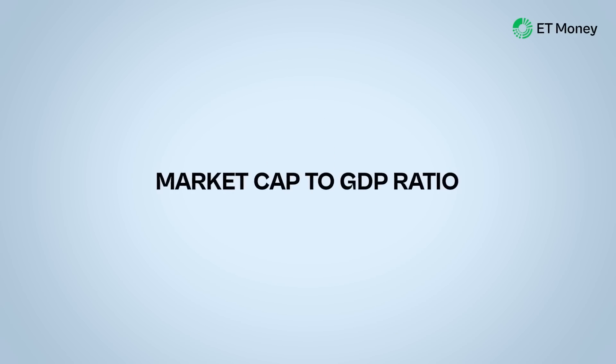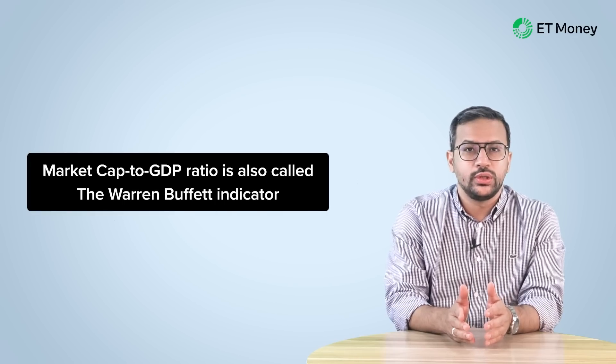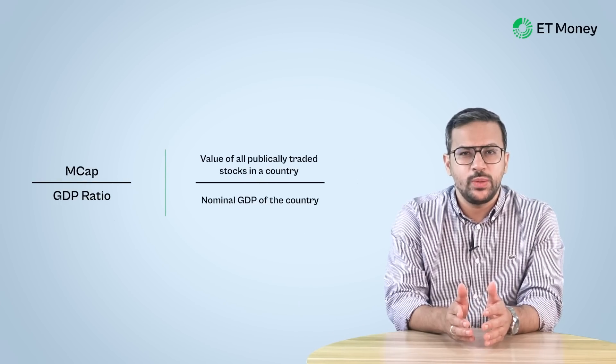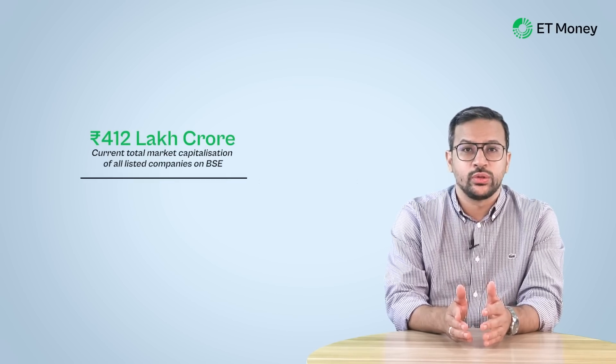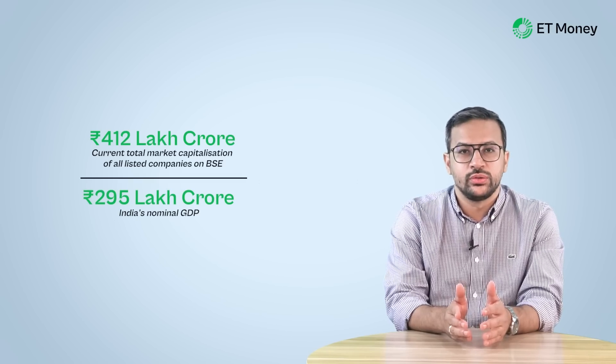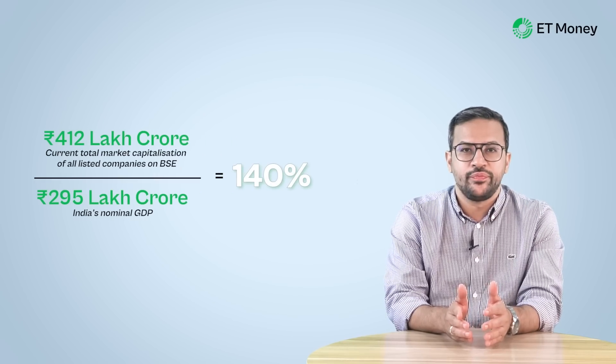Let's move to our next metric — the Market Cap to GDP ratio. The Market Cap to GDP ratio is also called the Warren Buffett indicator. Buffett often cites it as one of his primary directional tools for determining whether a country's stock market is cheap or expensive. It's calculated by taking the value of all publicly traded stocks in a country and dividing it by the country's nominal GDP. The current total market capitalization of all listed companies on BSE is 412 lakh crore, and India's nominal GDP is around 295 lakh crore. Dividing total market cap by nominal GDP gives us a ratio of approximately 140%.